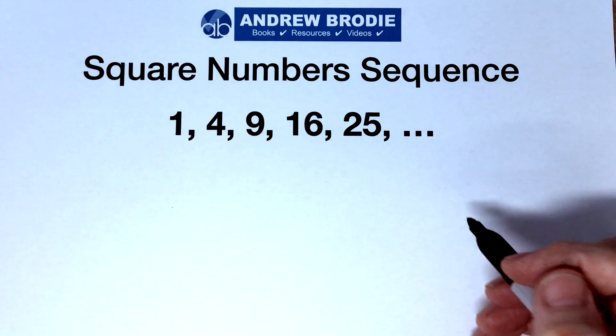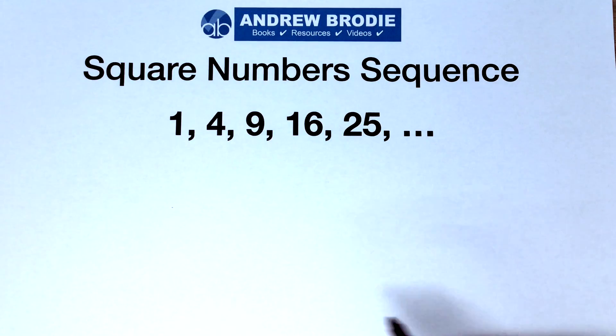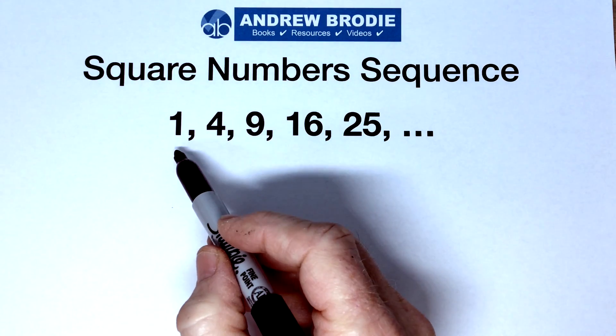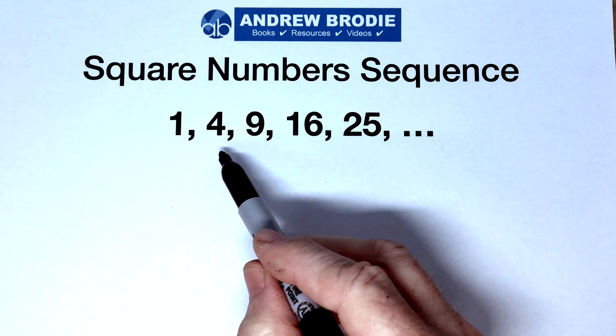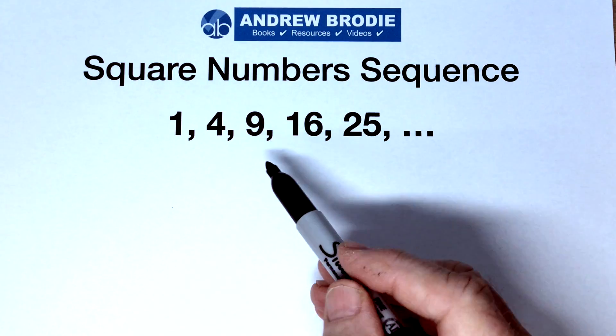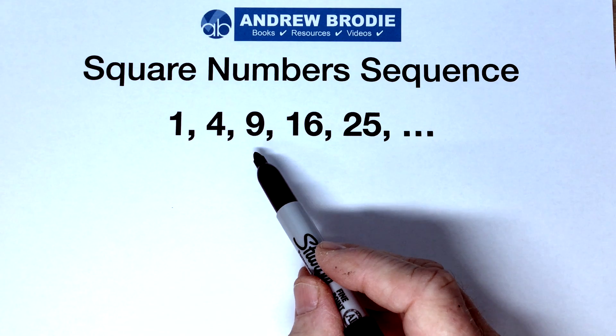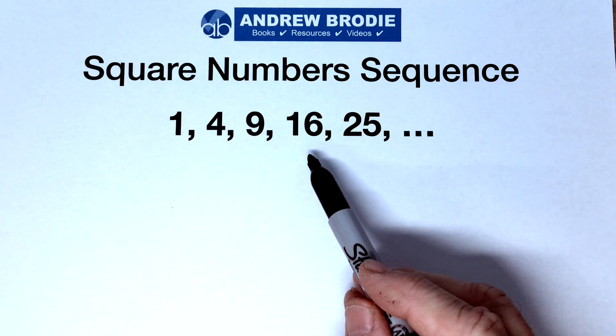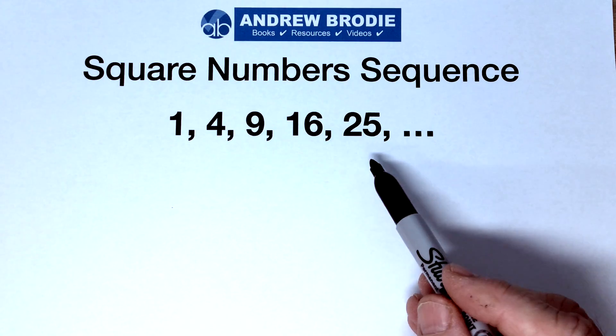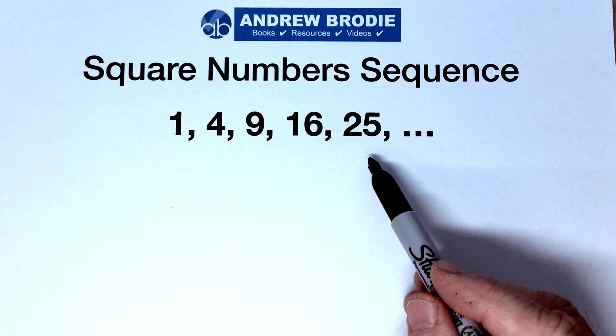This is the square numbers sequence. 1 squared is 1, 2 squared is 4, 3 squared is 9, 4 squared is 16, 5 squared is 25, and so on.